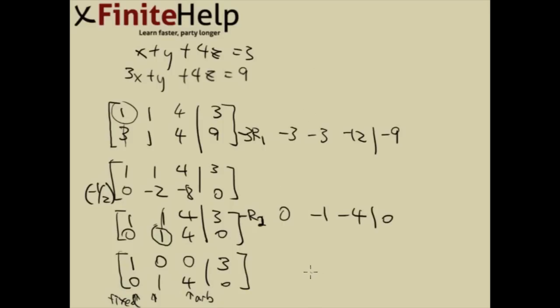For arbitrary variable z, I'm going to have z equals z. For the fixed variable y, here we have y plus 4z equals 0. So moving the 4z over, this is going to be y equals negative 4z. And this is the final answer.